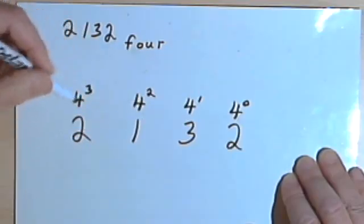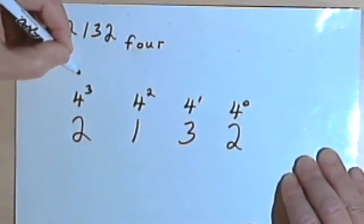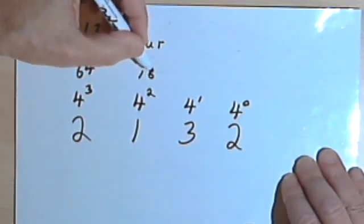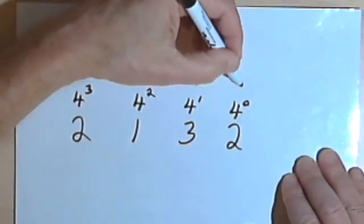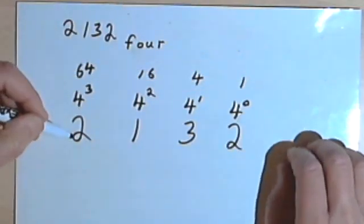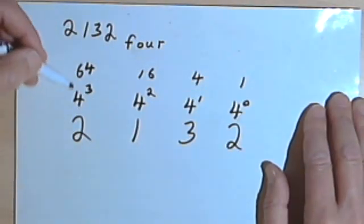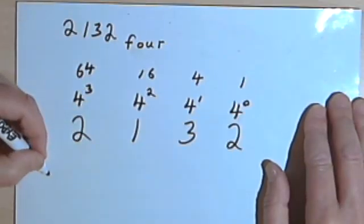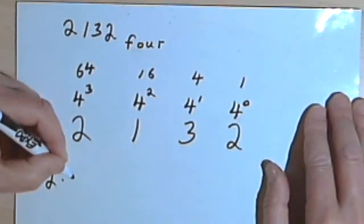And now I'm gonna write these powers of 4 as just normal numbers that you're used to. So 4 to the third is 64. And 4 squared is 16. 4 to the first is 4. And 4 to the zero is 1. So I've got a 2 in this first left-hand 4 to the third column. So that means I've got 2 times 4 to the third, or 2 times 64.